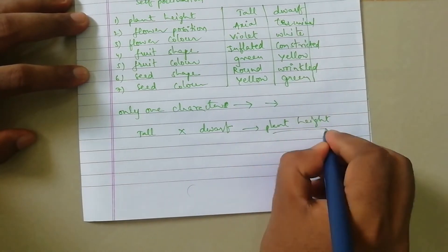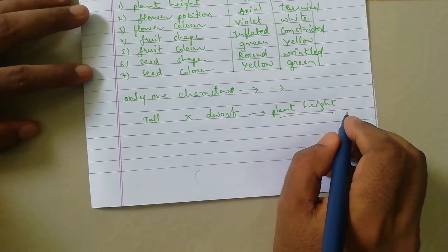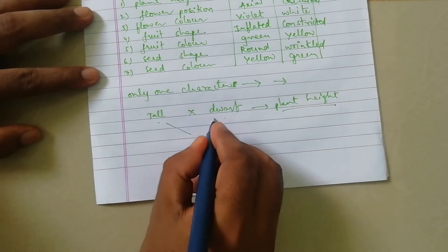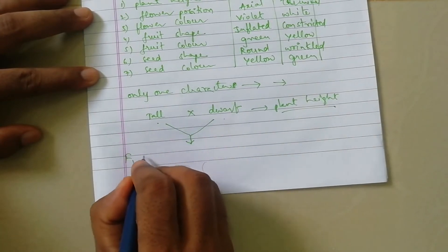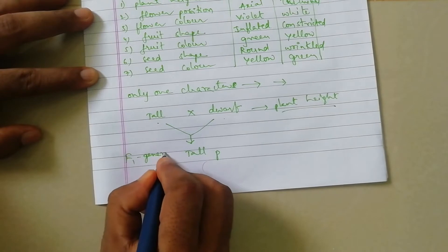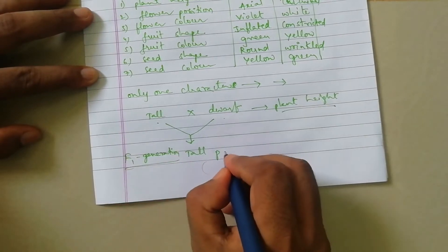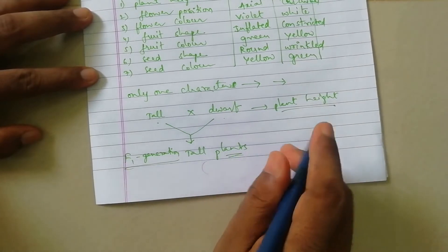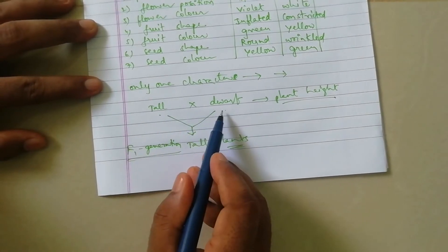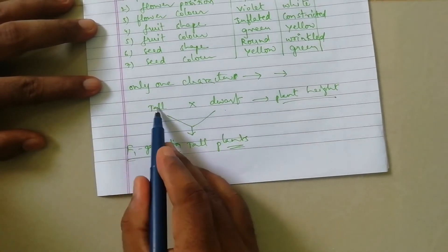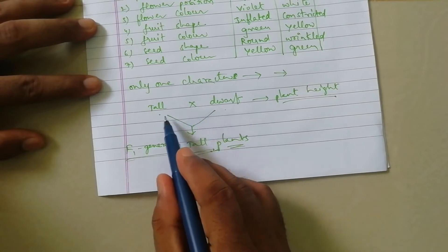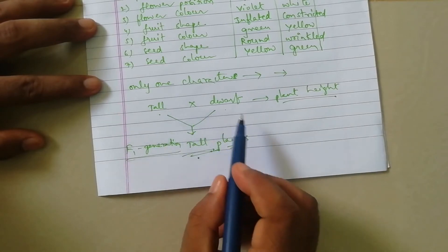He selected the plant height character and started his hybridization experiments. In this experiment, tall is crossed with dwarf plant, and in the F1 generation he observed production of all tall plants. By this he understood that when he selected two variant forms of a single character, he observed expression of only one of the traits of a parent — tall was the only one expressed in F1 generation.